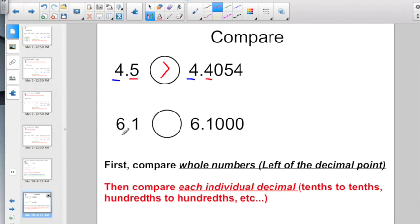Let's try it again. Compare the whole numbers. Here I have 6, here I have 6. Go and look at each individual decimal place. Here I have 1 in the tenths place. Here I have 1 in the tenths place. Here I have nothing else. Here I have a bunch of zeros. 0 is the same as nothing. So 6 and 1 tenth equals 6 and 1,000 ten-thousandths.